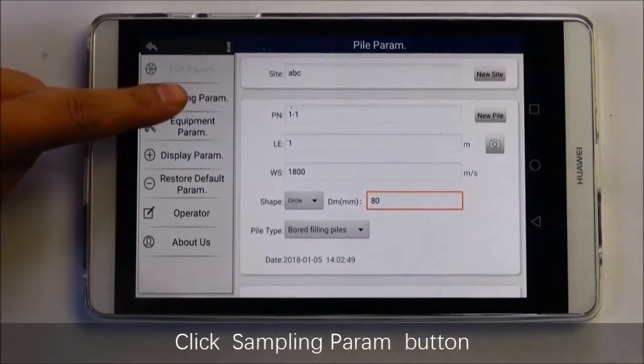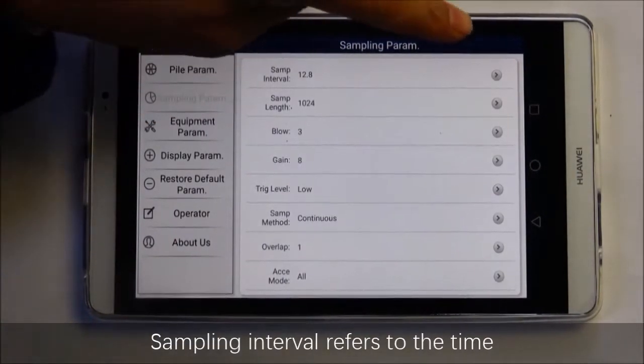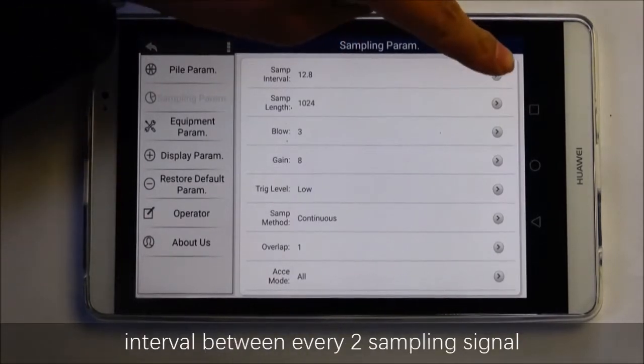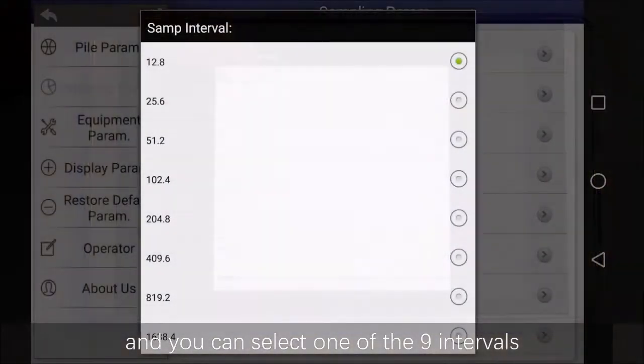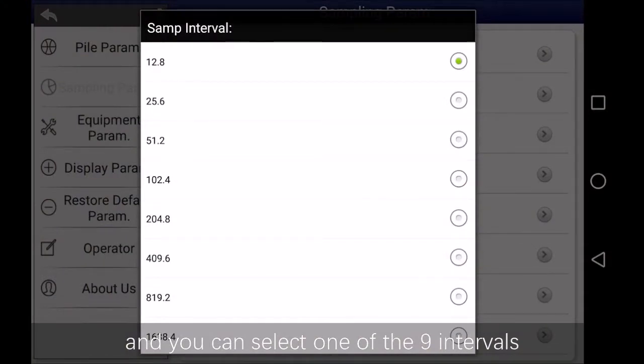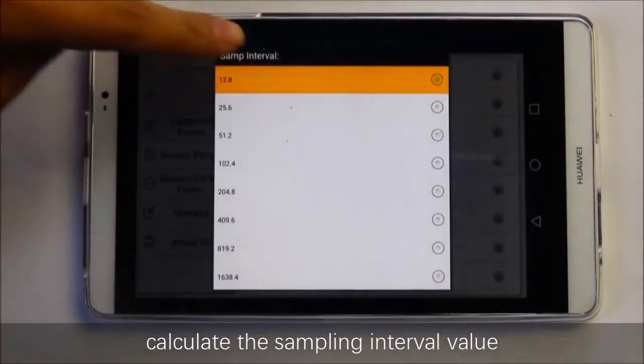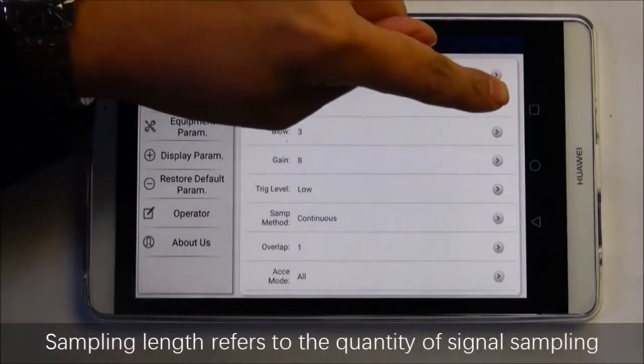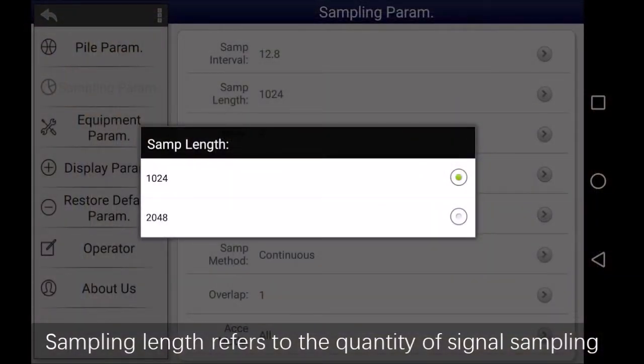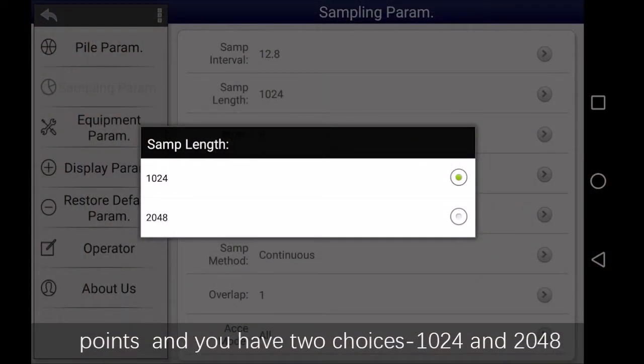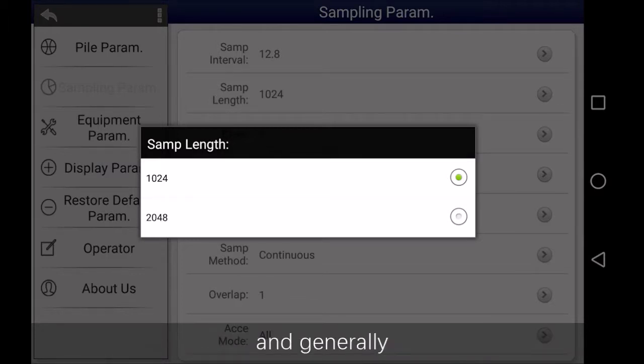Click the sampling parameter button. Sampling interval refers to the time interval between adjacent sampling signals. You can select one of nine intervals. The value can be set or not, but the pile length and velocity must be set before sampling so it will automatically calculate the sampling interval value. Sampling length refers to the quantity of signal sampling points. You have two choices: 1024 and 2048.